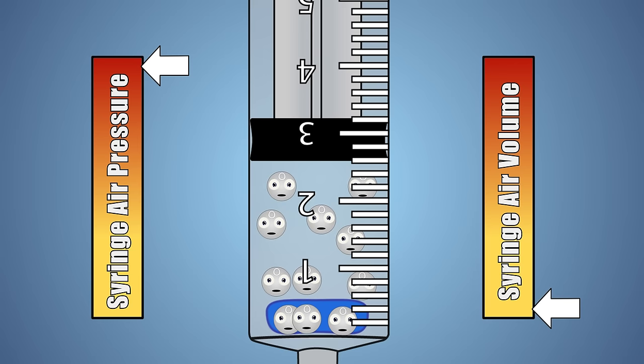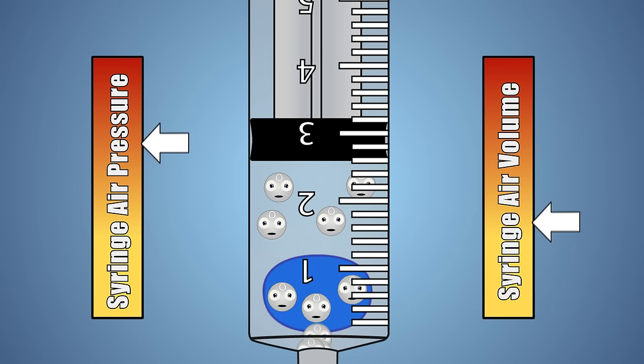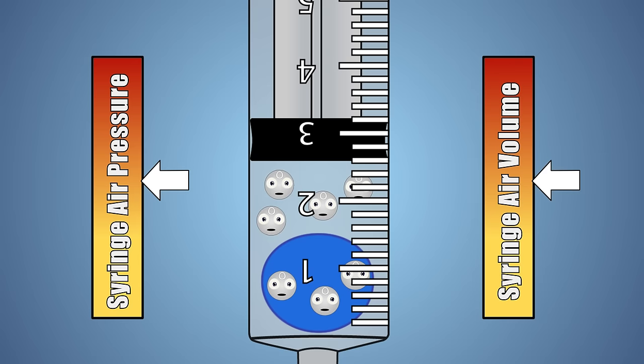When we remove our finger from the bottom of the syringe, we release the added pressure, and our balloon grows back to its original volume.